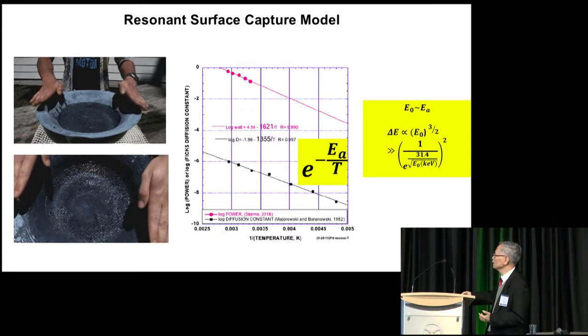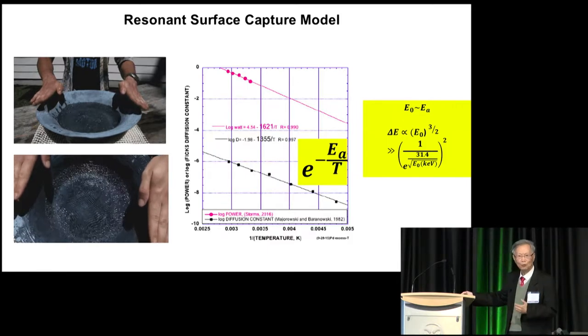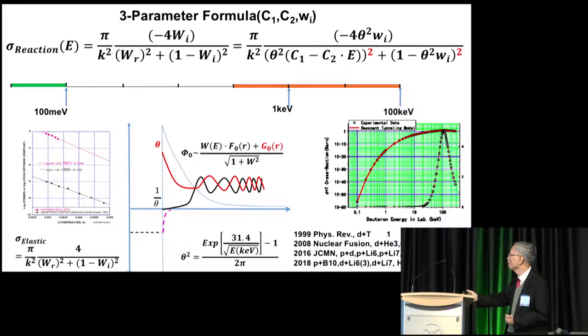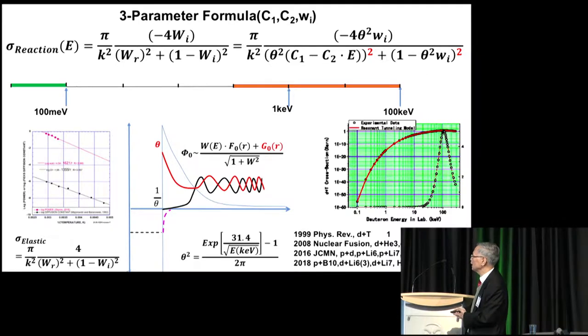So we call it resonant surface capture model. How do we express this model in quantum mechanics? In quantum mechanics, any wave function inside the Coulomb field can be the linear composition of the red wave function and the black wave function. When the coefficient W is equal to zero, the black one will disappear. Then the red one peaked at the nuclear surface. Then it turned Coulomb repulsion into Coulomb attraction. That's the resonance. So we have to study the coefficient.